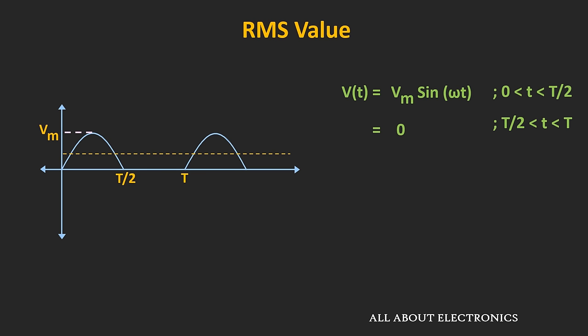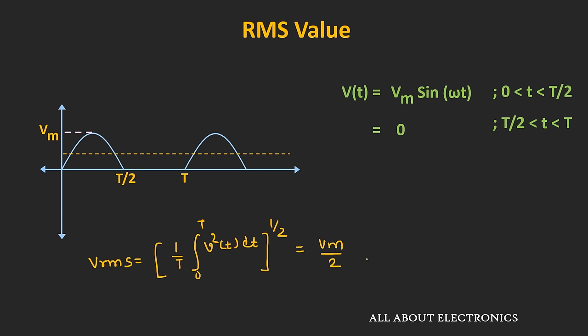Similarly, the next parameter defined for this half wave rectifier is the RMS value. The RMS value of any given signal is given by the square root of (1/T)·∫₀ᵀ V(t)dt. If we put the value of V(t) in this expression and evaluate it, then the RMS value for this half wave rectifier comes out as Vm/2. We will derive this expression in the next video.